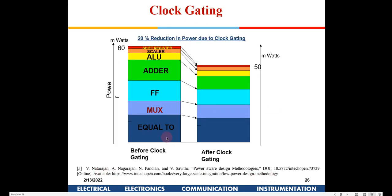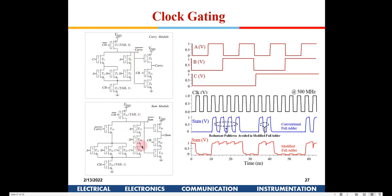A study applied clock gating to various functional blocks including multiplexers, multipliers, flip-flops, adders, ALUs, and scalar shift registers. By using clock gating, power was reduced from 60 milliwatts to 50 milliwatts. The circuits in this study used tunnel FETs instead of MOSFETs, but the clock gating concept remains the same.